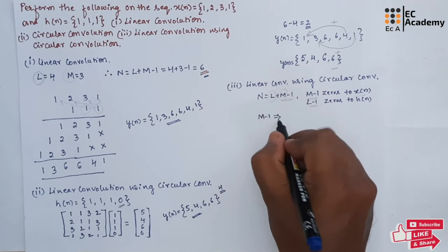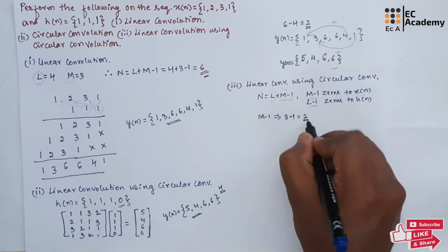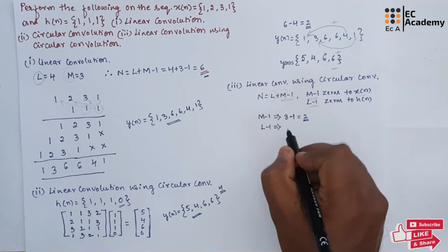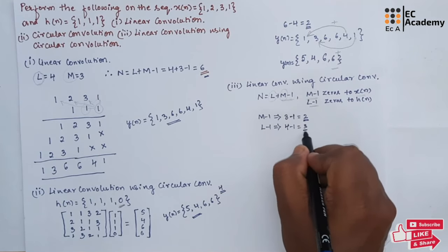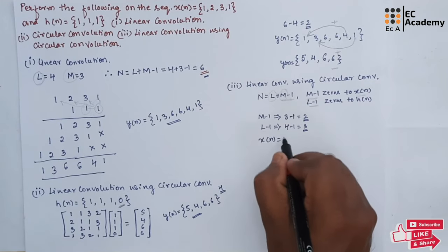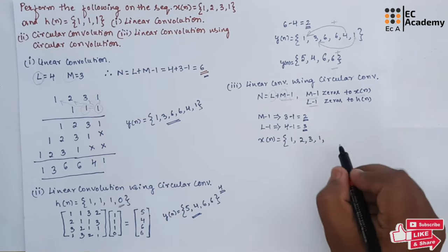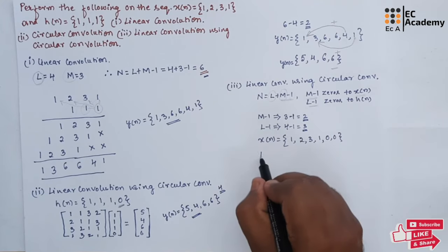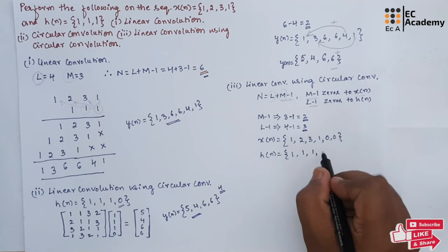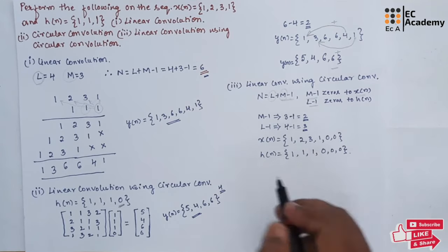So x of n is 1, 2, 3, 1 and m minus 1 is 3 minus 1, which is 2. So we need to append 2 zeros to x of n. And l minus 1 is 4 minus 1, which is 3. So we need to append 3 zeros to h of n. So x of n becomes 1, 2, 3, 1, 0, 0 and h of n becomes 1, 1, 1 with 3 appended zeros.